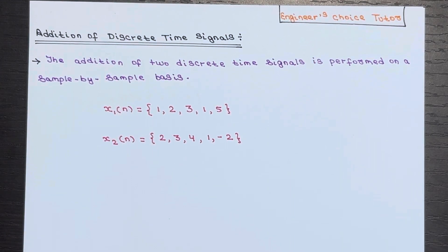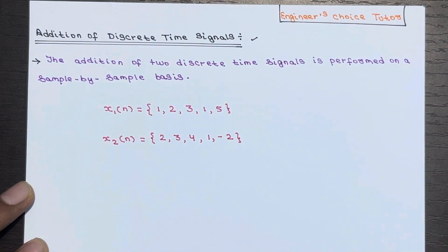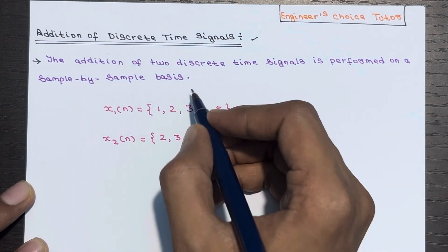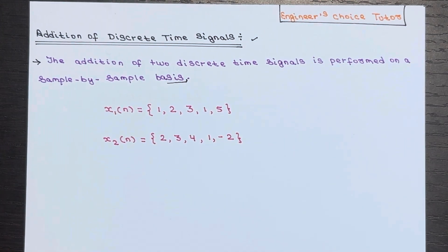In today's lecture we are going to talk about adding discrete time signals. When we add two discrete time signals, we do it sample by sample. The addition of two discrete time signals is performed on a sample by sample basis. The result of adding two signals x1(n) and x2(n) is a new signal y(n) whose value at any given moment is equal to the sum of the samples of the two original signals at that same moment.